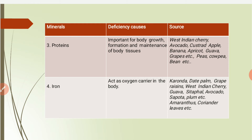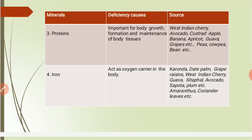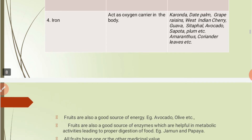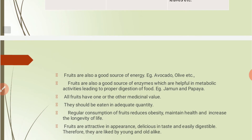Iron acts as an oxygen carrier in the body, present in hemoglobin, which transfers oxygen throughout the body. Sources of iron include caronda, date palm, grape raisins, West Indian cherry, guava, sitaphal, avocado, sapota, plum, and in vegetables, amaranthus and coriander leaves.